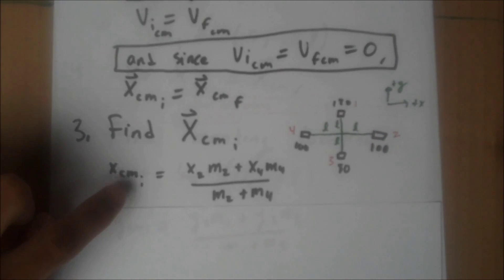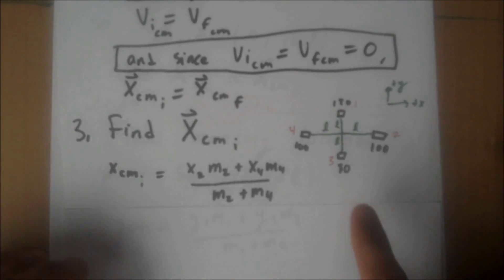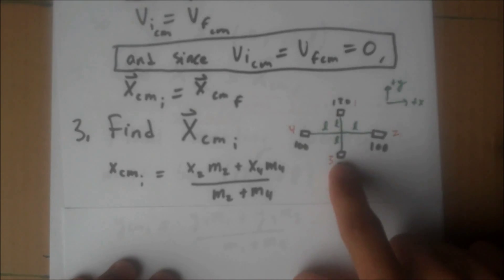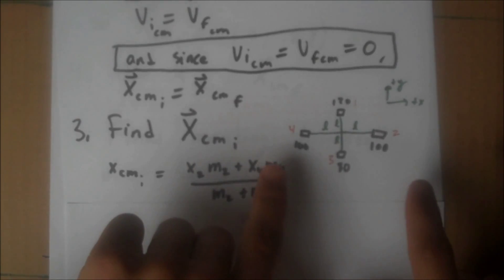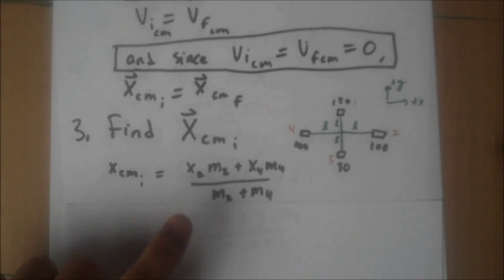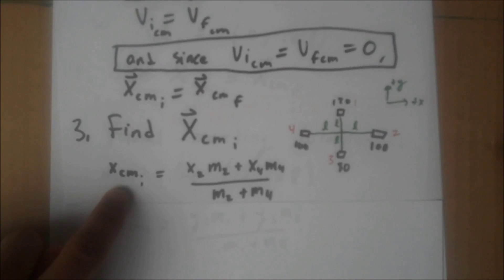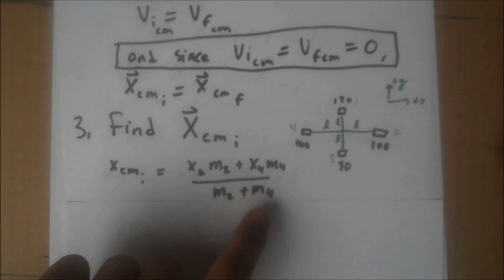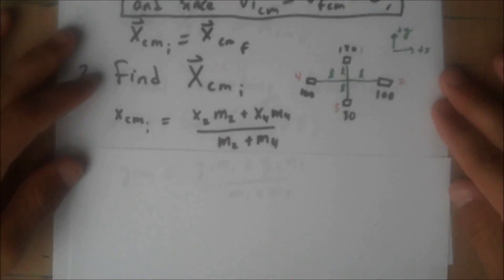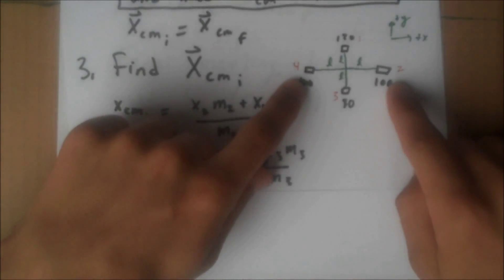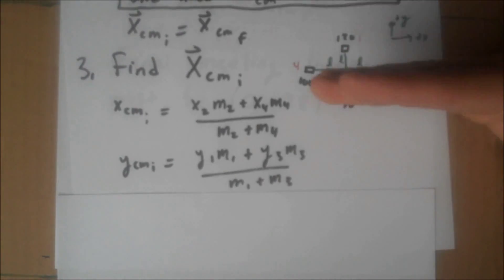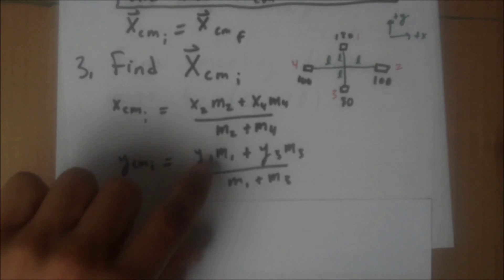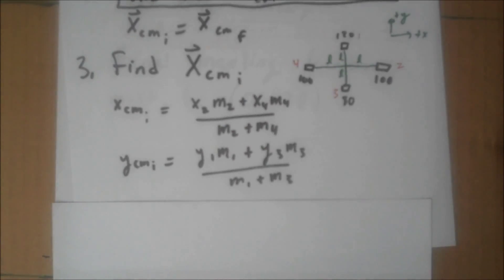The x coordinate of the center of mass at the beginning - notice 1 and 3 are centered at zero, so they contribute nothing to the x coordinate of the center mass. The only masses that contribute to the x coordinate of the center mass are 2 and 4. Using the formula for center mass, the x coordinate initially will be x₂m₂ plus x₄m₄ over all the mass, m₂ plus m₄. In the same way, 4 and 2 will not contribute at all to the y center mass because they're both at position y equals 0. We only need to worry about 1 and 3. That would be y₁m₁ plus y₃m₃ over m₁ plus m₃.